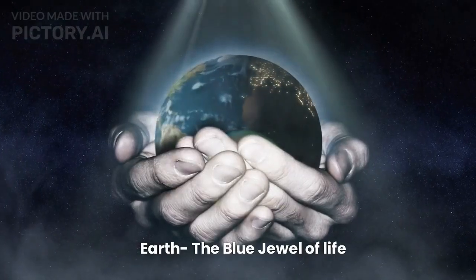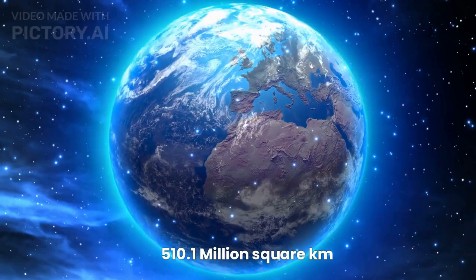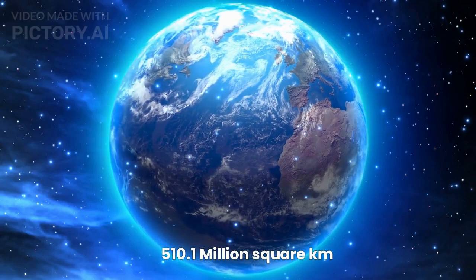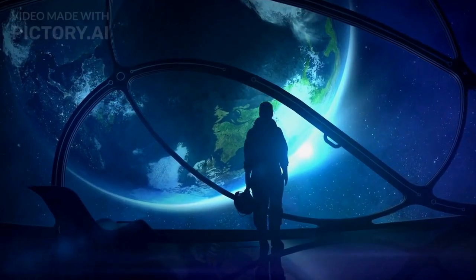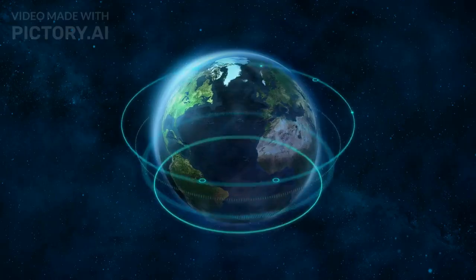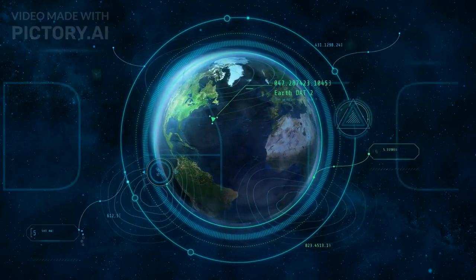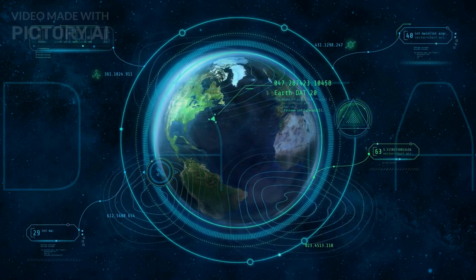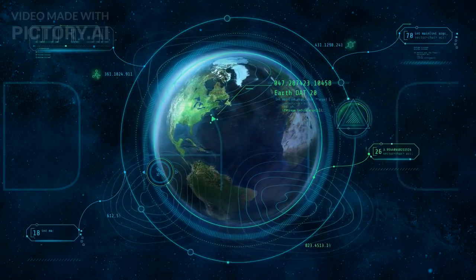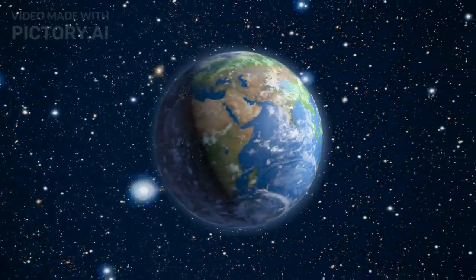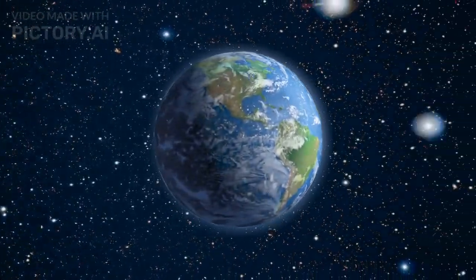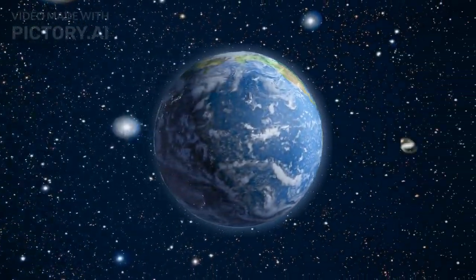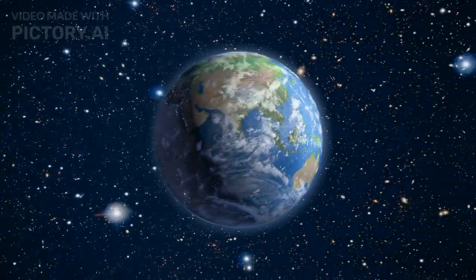Third, Earth the blue jewel of life. The surface area of Earth is 510.1 million square kilometers. Our home planet, Earth, stands out as a haven for life. A dynamic environment of oceans, continents, and diverse ecosystems flourishes due to its ideal distance from the sun. Earth's atmosphere, rich in oxygen, not only supports life but also regulates temperatures and protects us from harmful radiation, making it a remarkable haven for biodiversity.